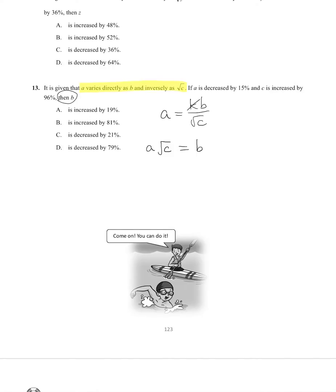Let's now apply the changes from the question. A is decreased by 15%, so A is 1 minus 15%. And C is increased by 96%, so for the C value it's 1 plus 96%.